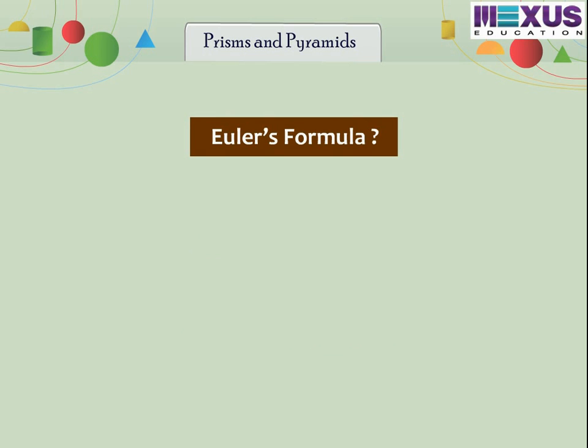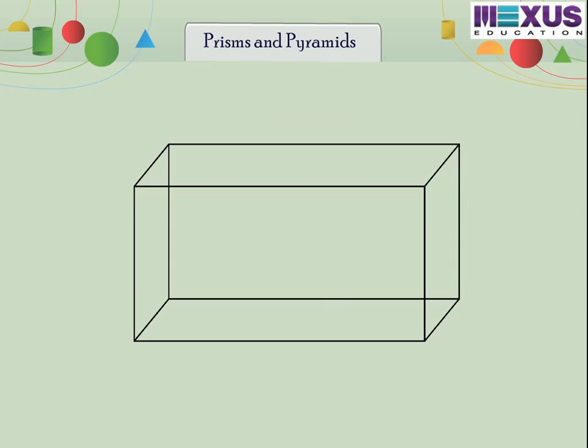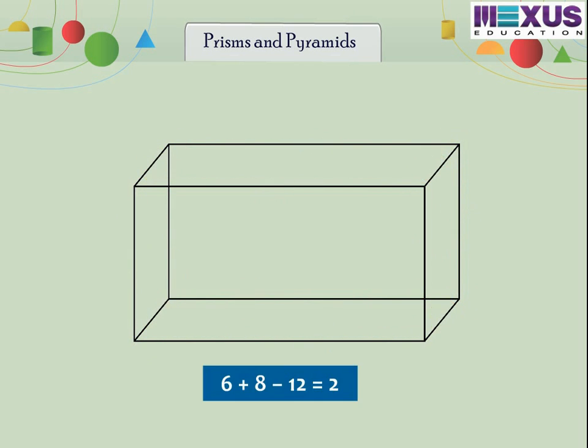Have you ever heard about Euler's formula? For many solid shapes, the number of faces plus the number of vertices minus the number of edges always equals 2. This can be written as F plus V minus E is equal to 2. In fact, this formula is true for any polyhedron. No matter what we do, we always end up with 2. Let's try it on the cuboid. A cuboid has 6 faces, 8 vertices and 12 edges. So, 6 plus 8 minus 12 is equal to 2.